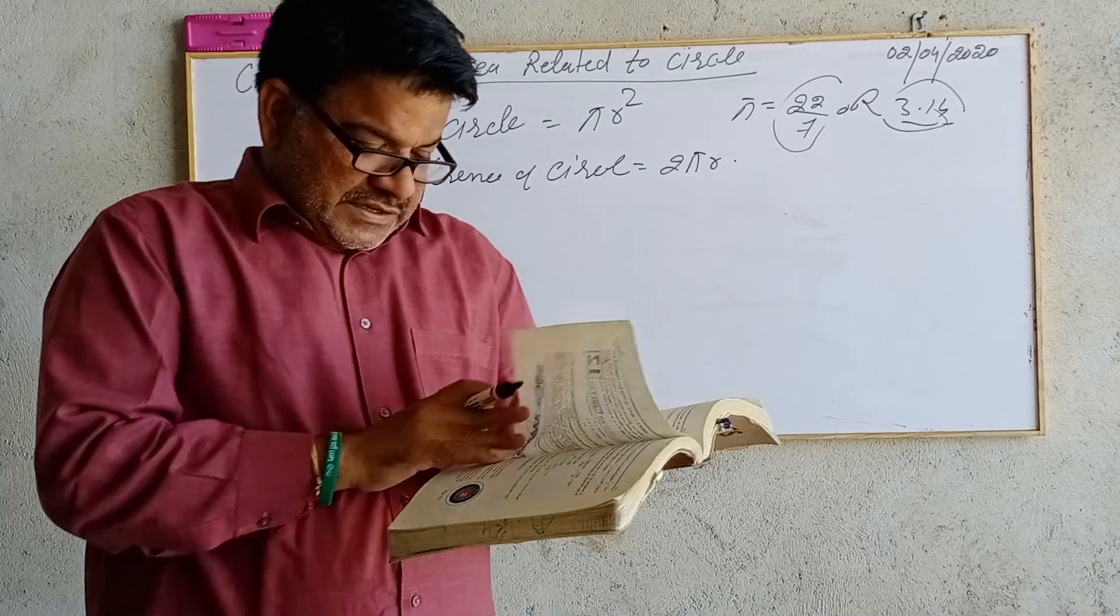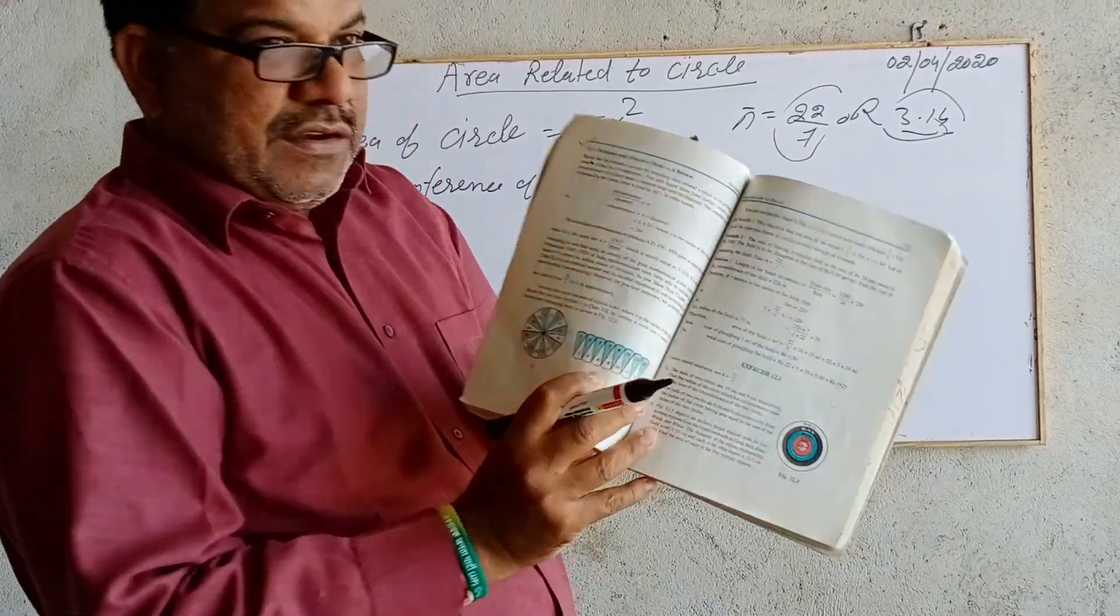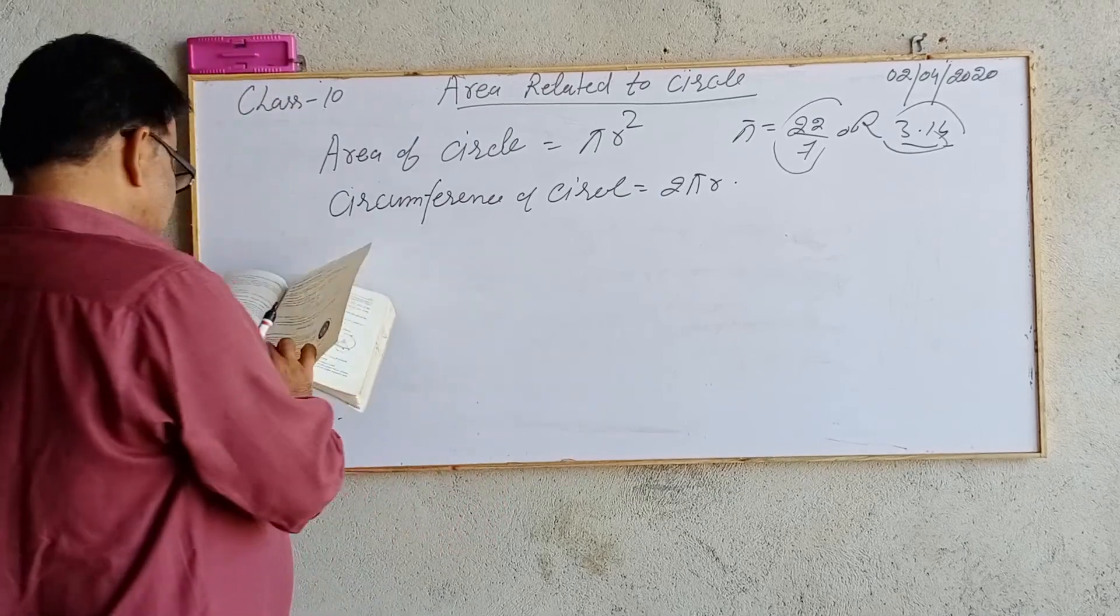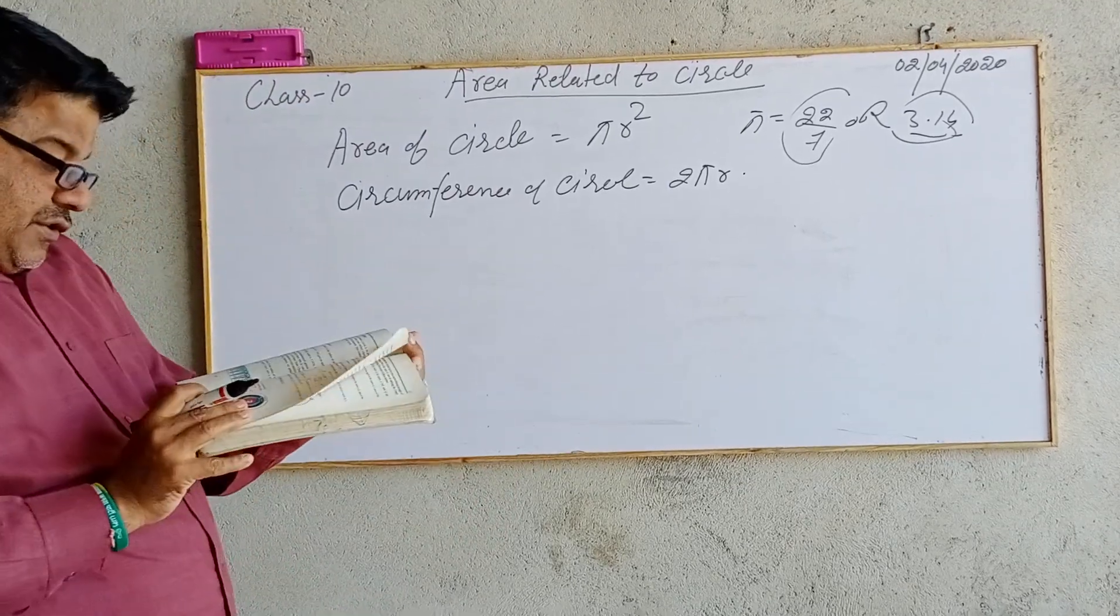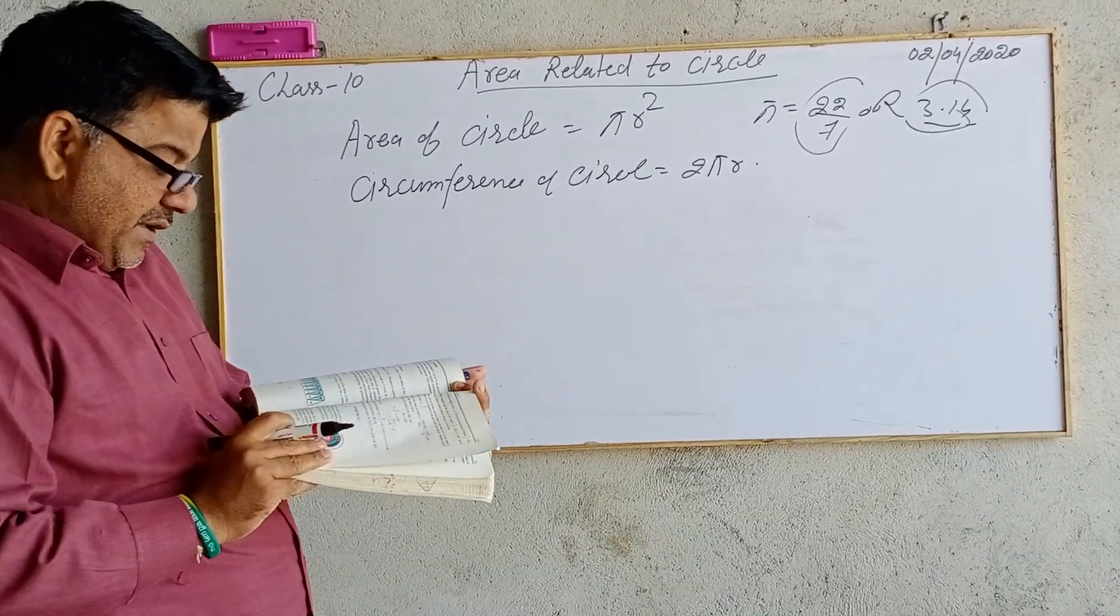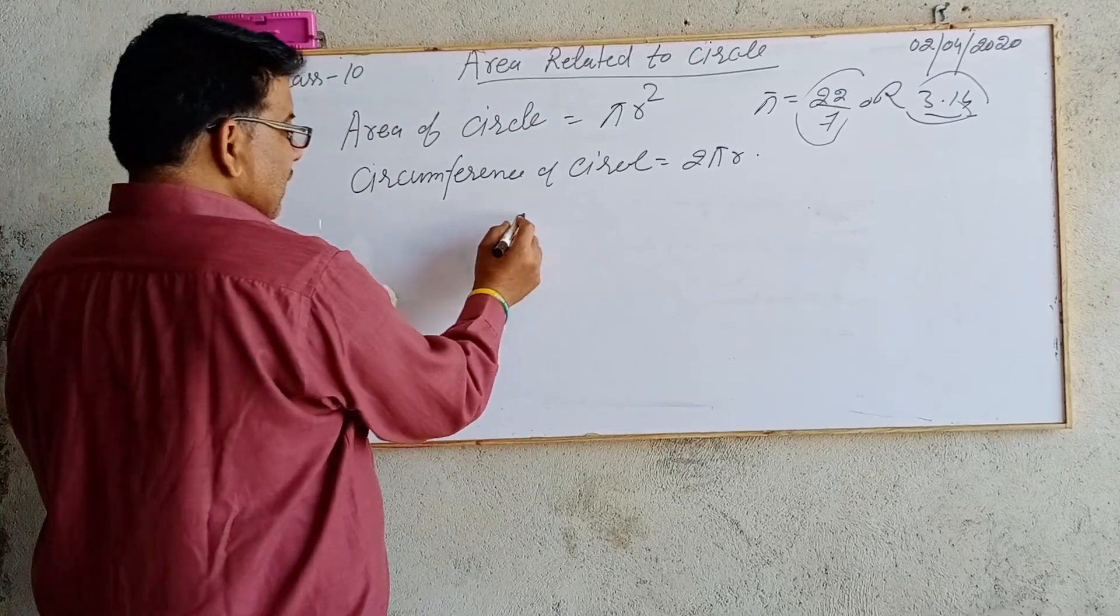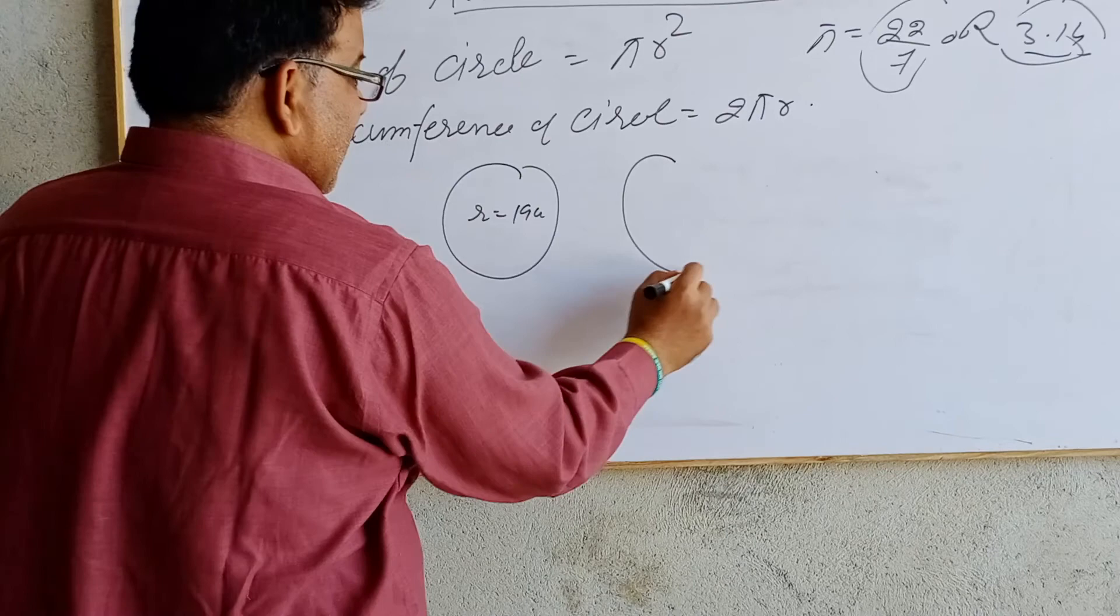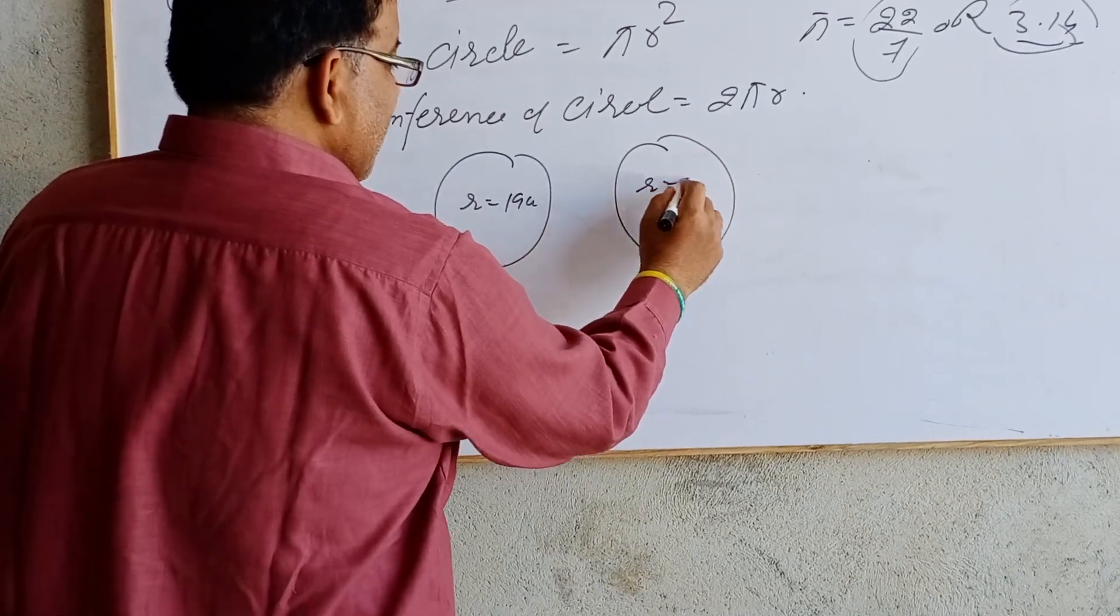So first we will study question number 1 of exercise 12.1. The radii of circles are 19 cm and 9 cm respectively. There are two circles: first circle radius is 19 cm, and second circle radius is 9 cm.